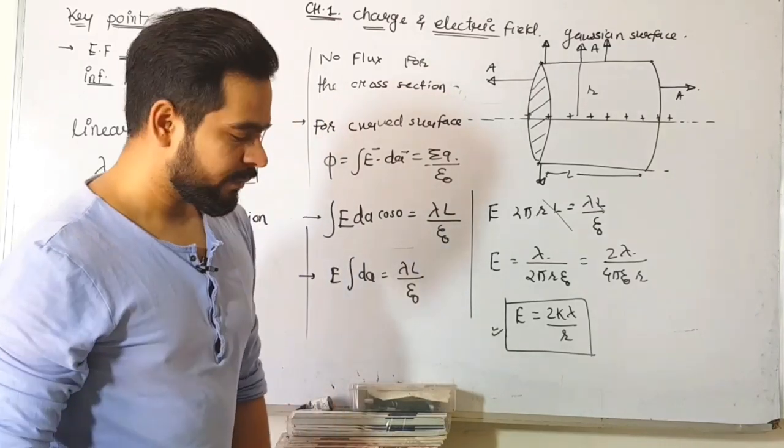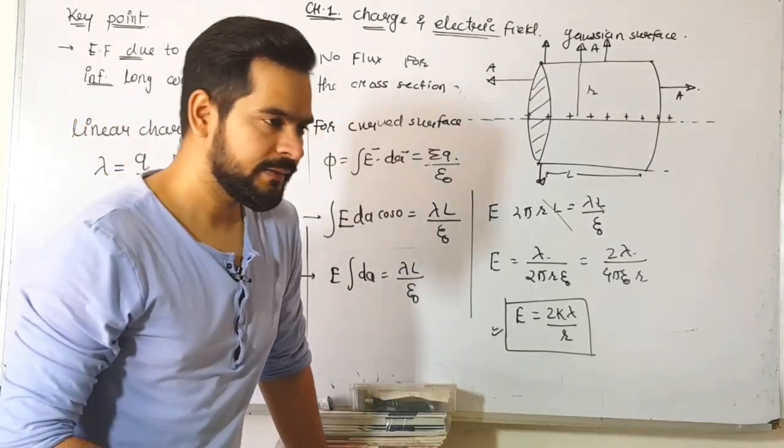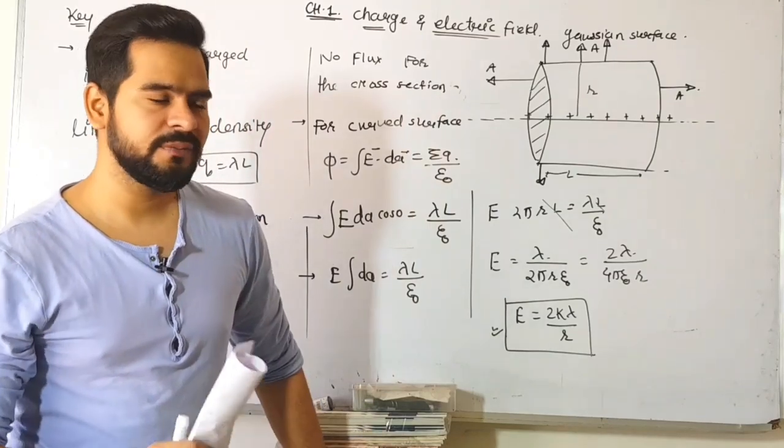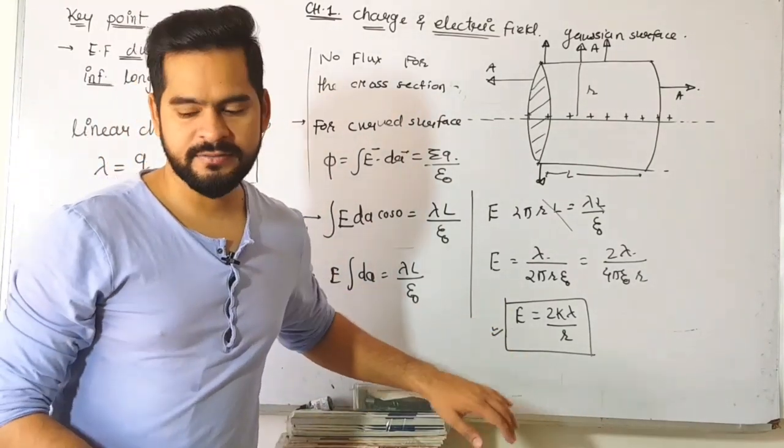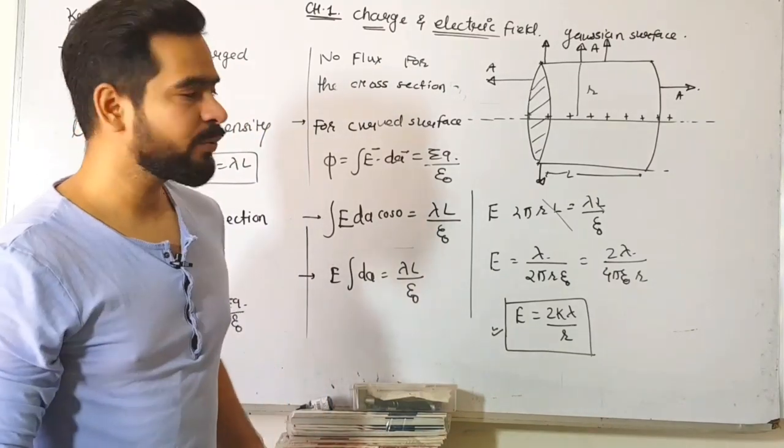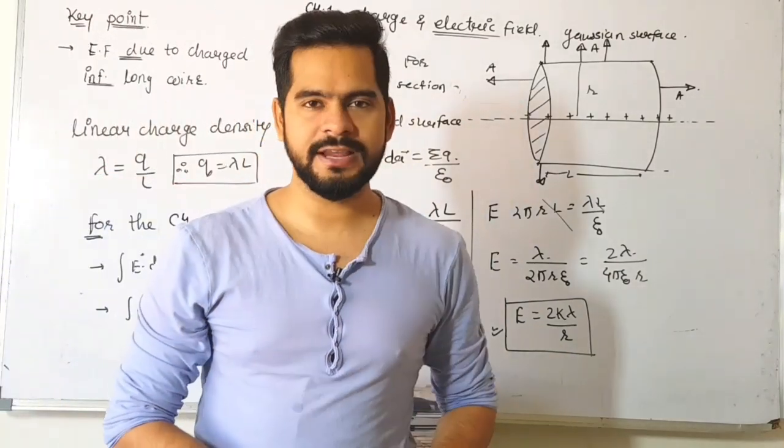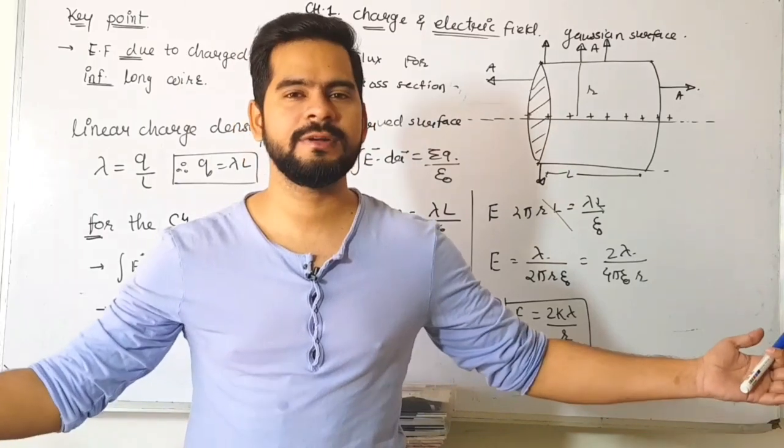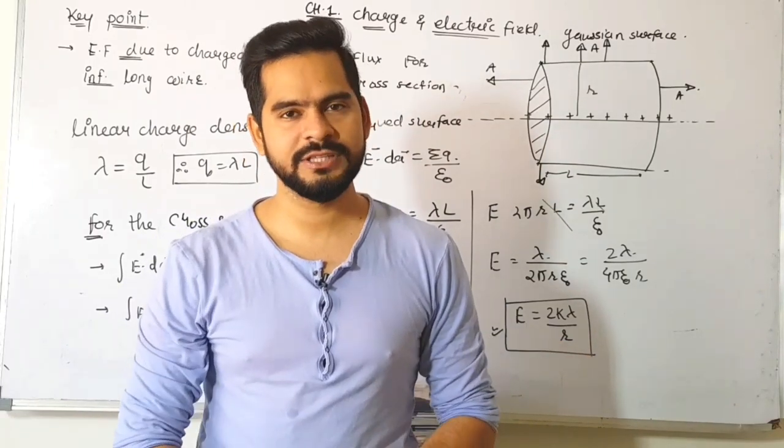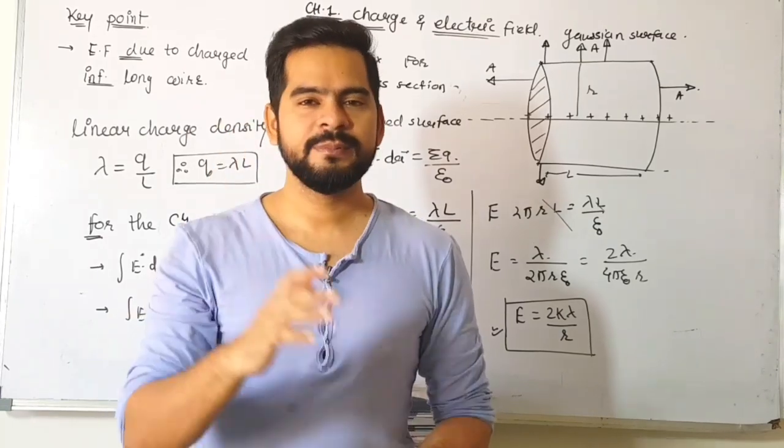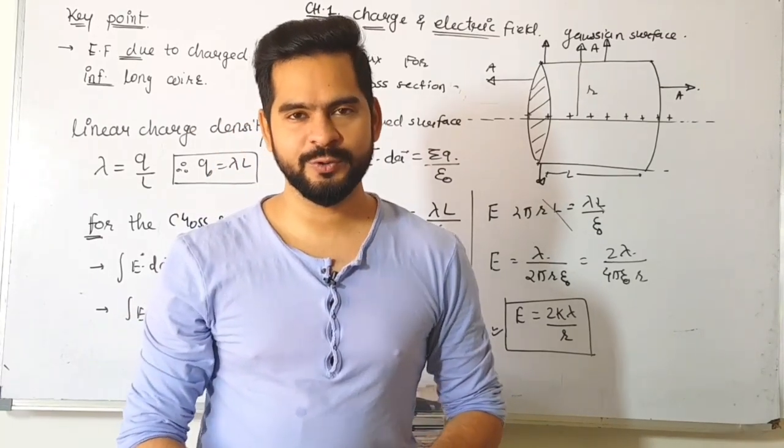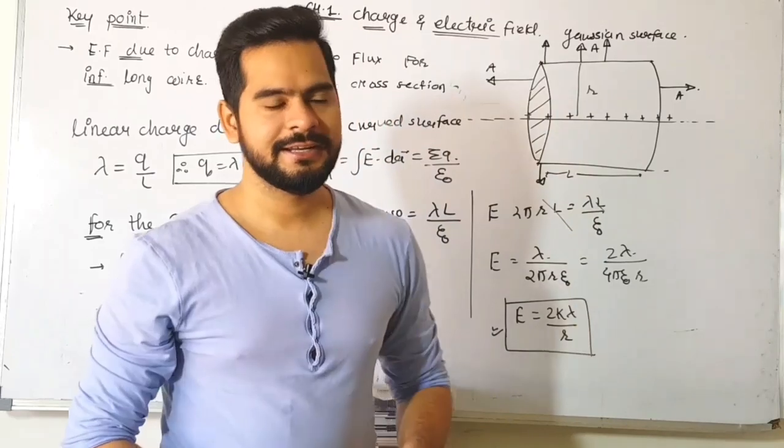For finite length wire, the formula is different but outside our syllabus for JEE Main and NEET. We'll discuss it in another video. So your electric field is 2kλ/r. This completes today's session. I hope you liked the class. Keep sharing with friends preparing for next year's exams. See you in the next video. Till then, do whatever you want but don't trouble your mom. Take care and bye.